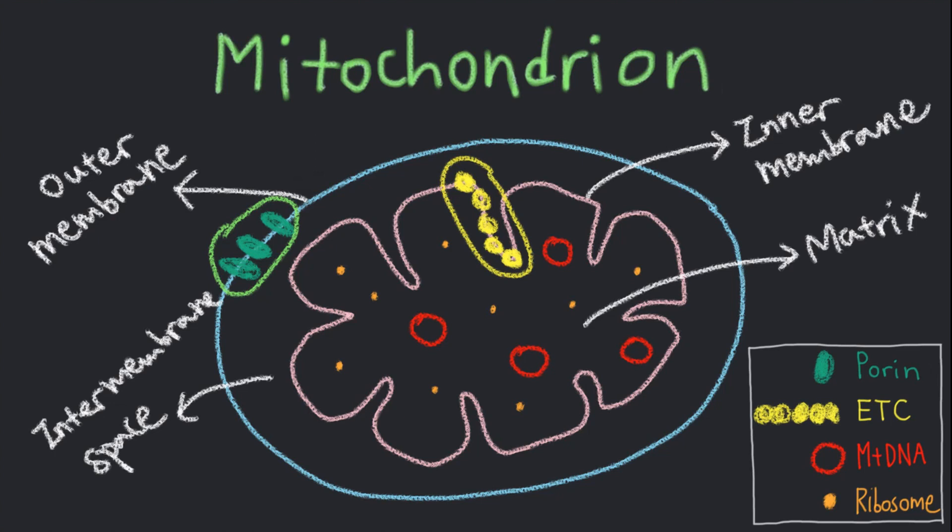The folded part of the inner membrane is called cristae, which expands the surface area of the inner membrane.